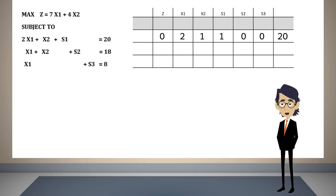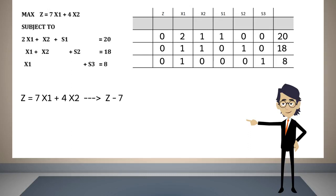In this way, the row that corresponds to the first constraint will have the following values. Now we will place the values of the variables in the rows corresponding to the second and third constraints. The values found on the right-hand side of the equalities appear in the last column of the table. To write the objective function following the same pattern, we must rewrite it in the following form. Now we are ready to place the equation in the table.